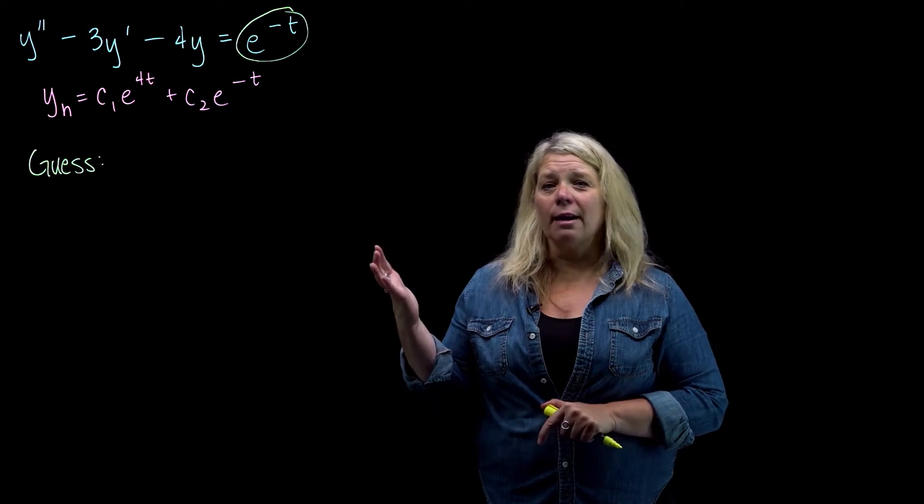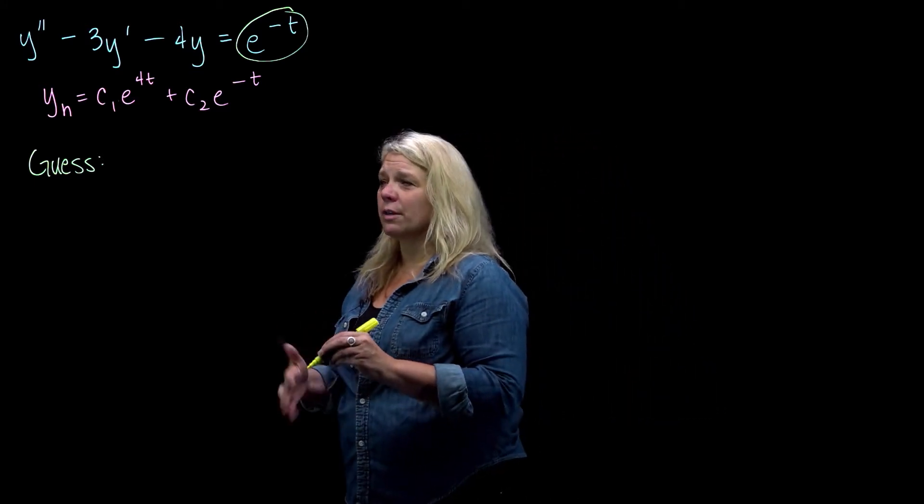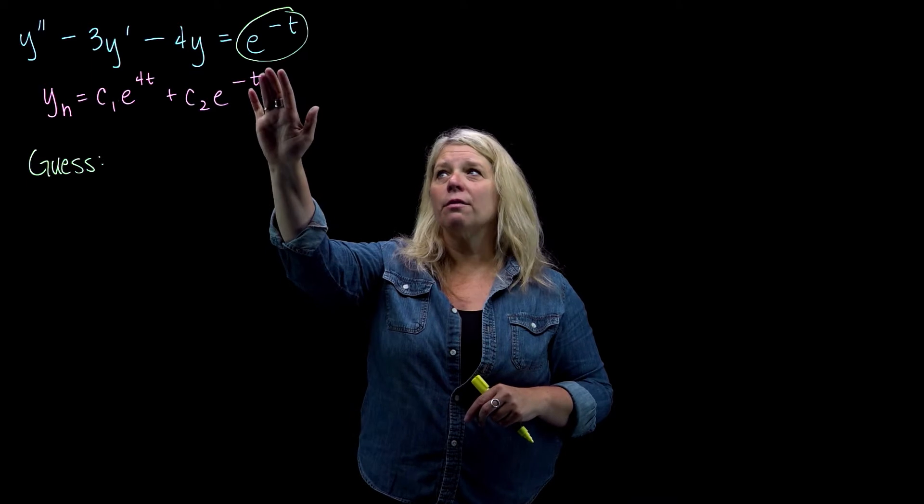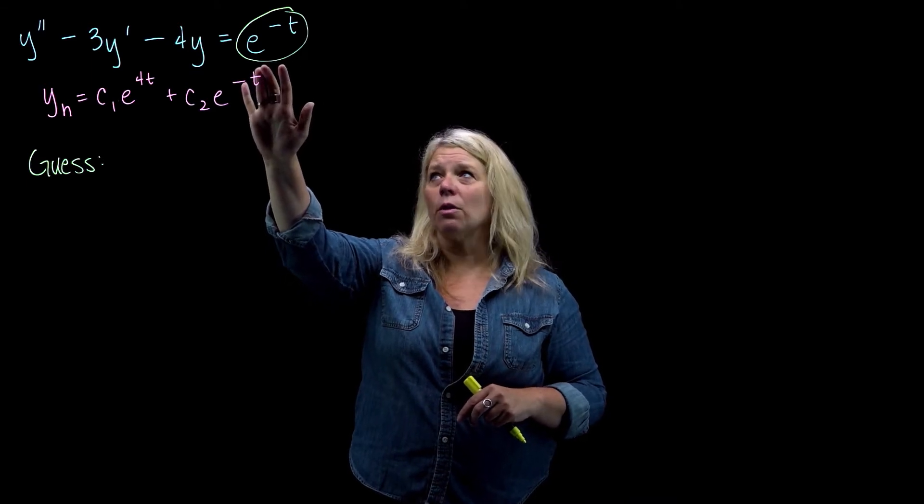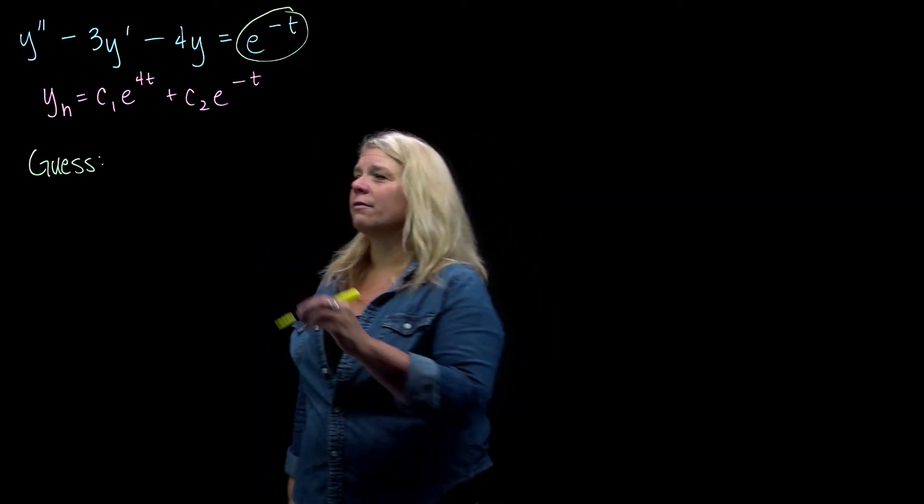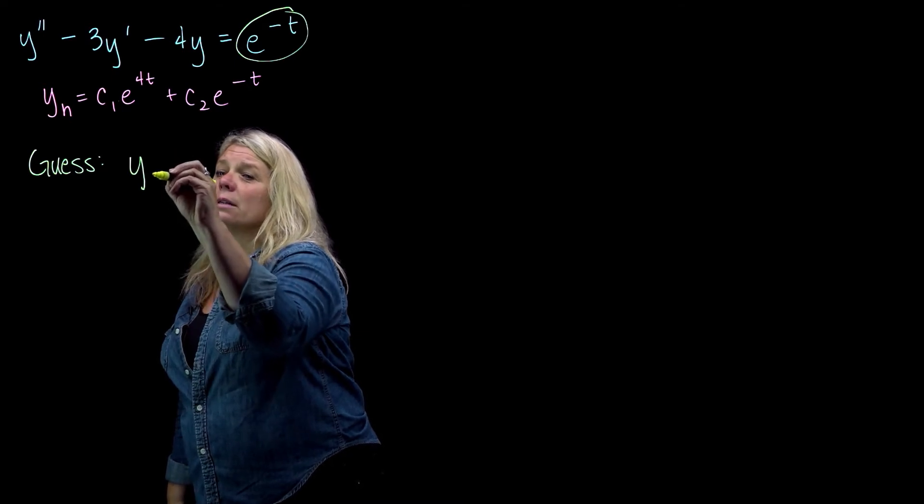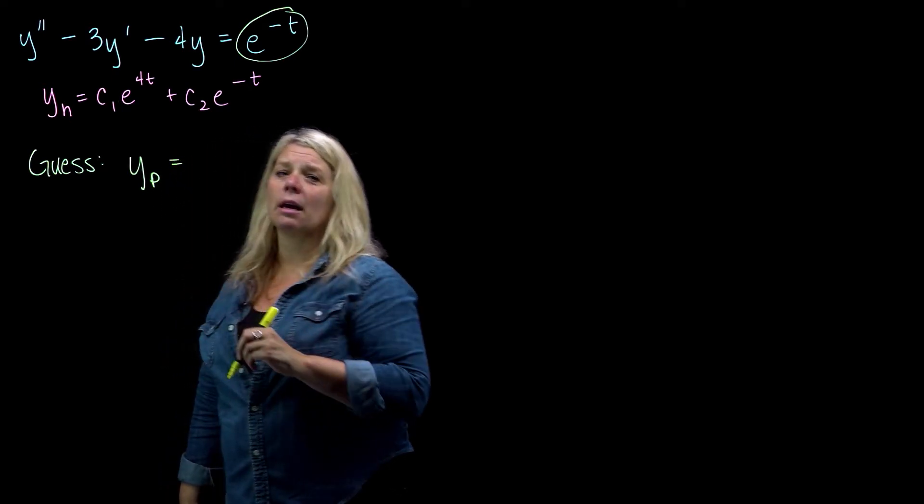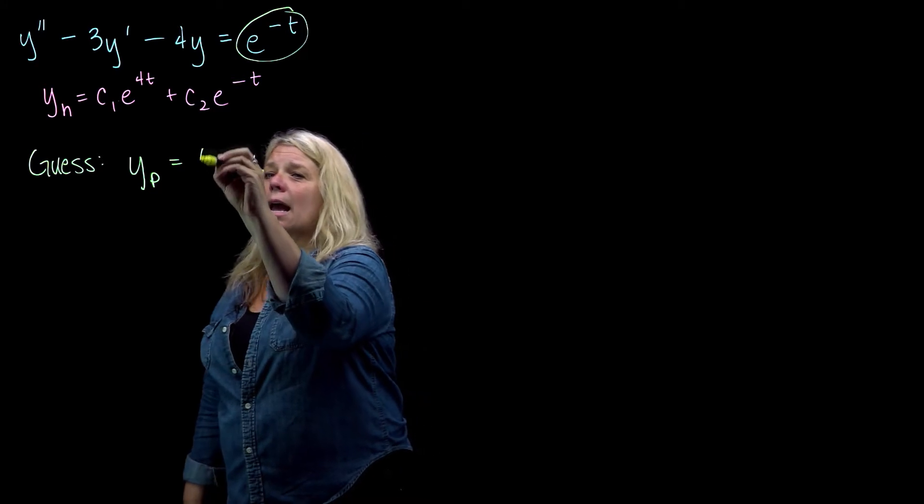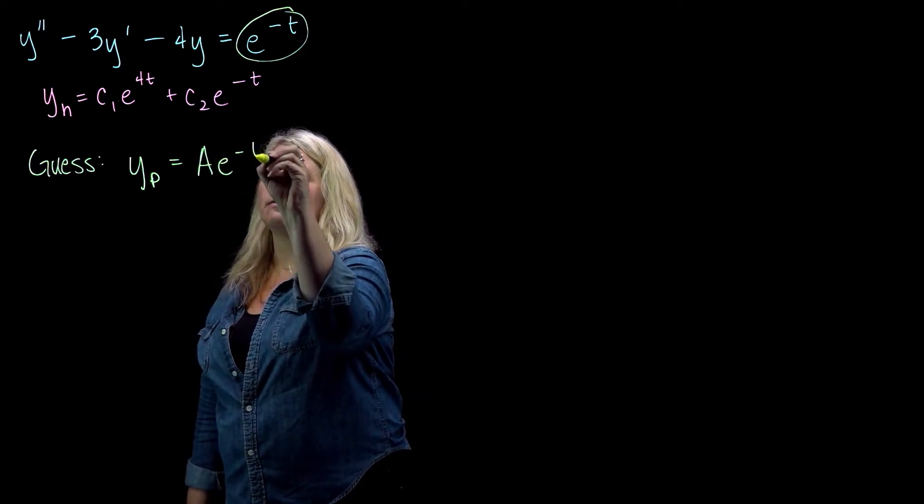So this is a perfect kind of problem to use undetermined coefficients for because this function and all of its derivatives are just constant multiples of e to the negative t. So I would start, perhaps, by thinking about guessing y_p equals A e to the negative t.